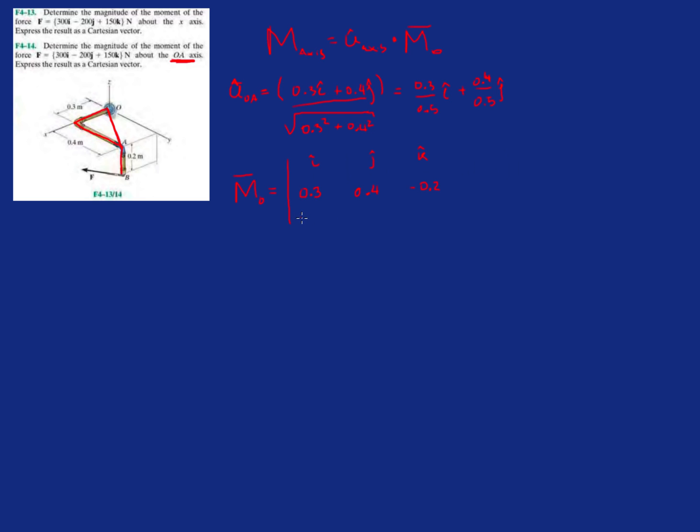So that's going to be 0.3i, 0.4j, minus 0.2k. And the last one, at least the force, the force is 300, minus 200, and then 150. Okay, so now let's do the determinant.